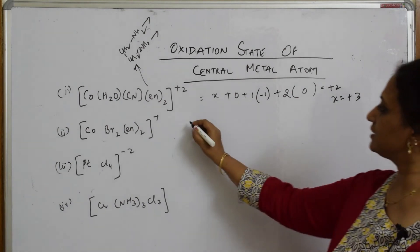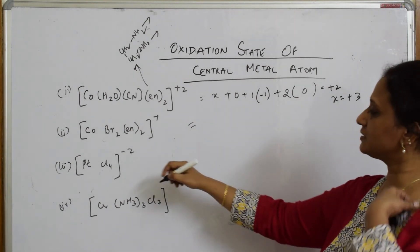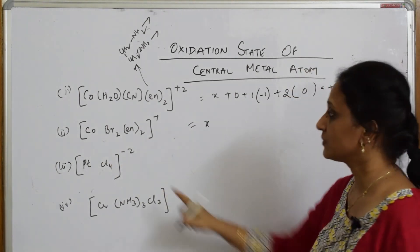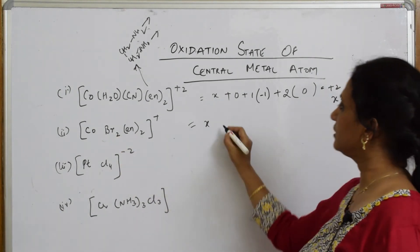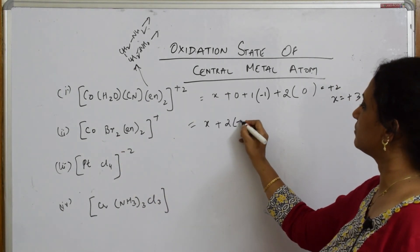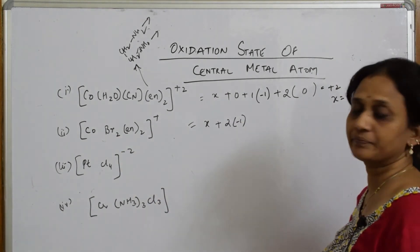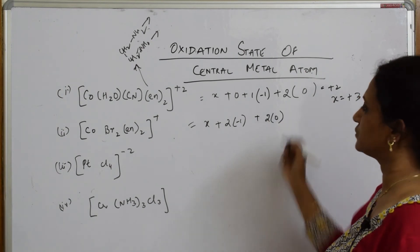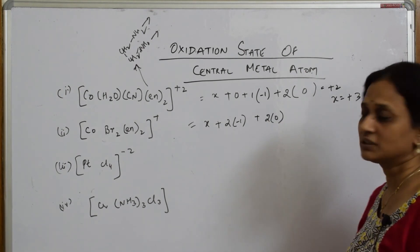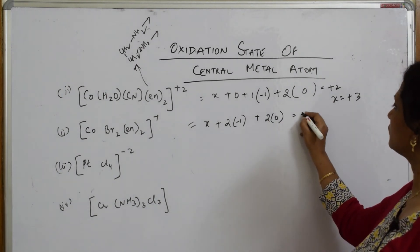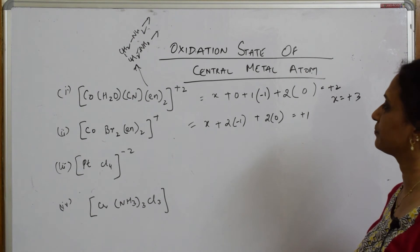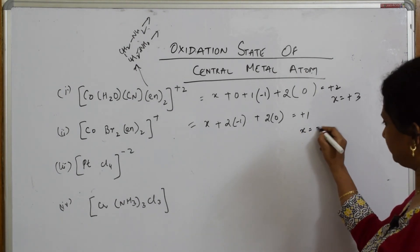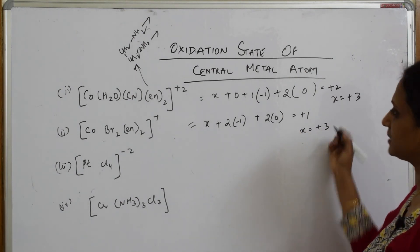For another cobalt complex: X for cobalt, oxalate contributes 2 × (−1), ethylene diamine contributes 2 × 0. The overall charge is +1. Solving: X − 2 + 0 = +1, therefore X = +3.